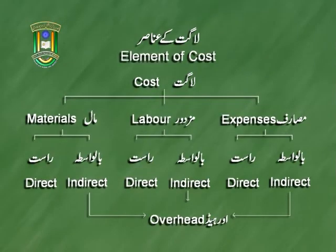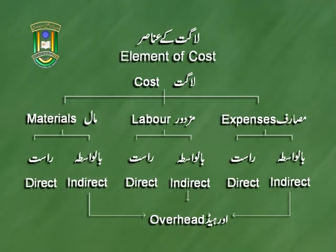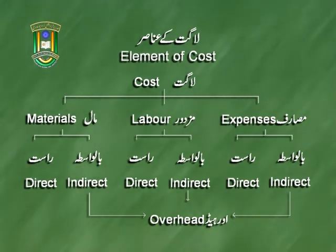لاغت کے عناصر دیکھ لیے — لاغت کو تین حصوں میں تقسیم کیا گیا: مال (material)، مزدوری، مصارف۔ اور ہر ایک عنصر کو پھر دو حصوں میں بانٹا گیا: direct اور indirect۔ یہ جاننا بہت ضروری ہے کیونکہ indirect مال، indirect مزدوری اور indirect مصارف — ان تینوں کو اگر جوڑیں گے تو وہ ہوگا overhead۔ Overhead یعنی aggregate of indirect expenses۔